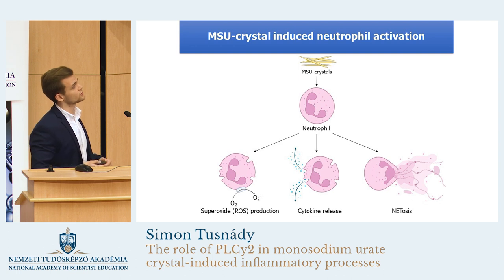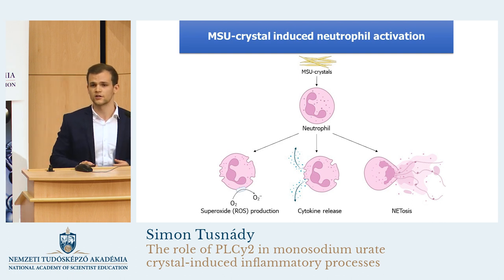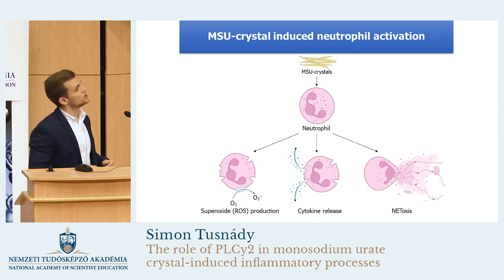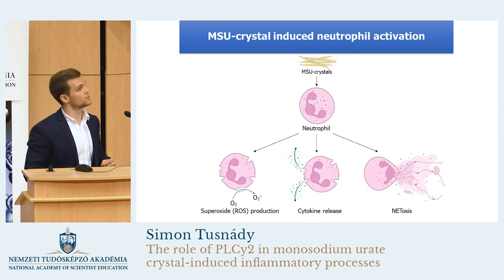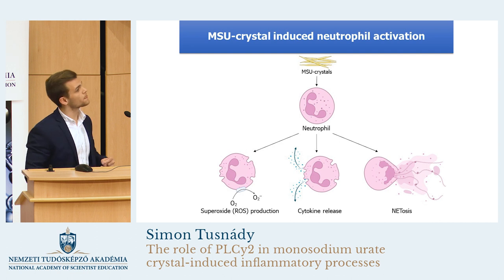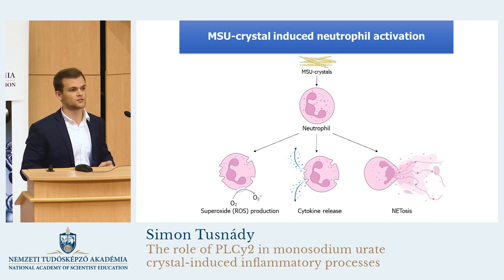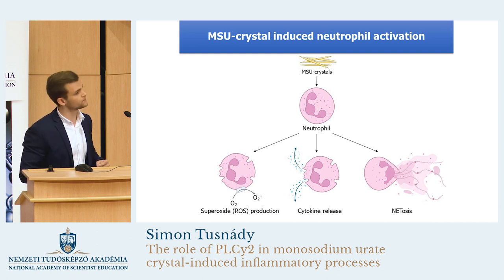The first one is superoxide or ROS production. ROS stands for reactive oxygen species. These oxygen radicals are generated by the neutrophils from oxygen, and they can help the neutrophils in their bacteria-killing processes.